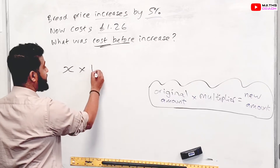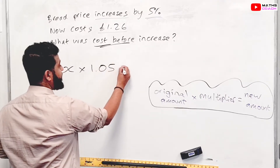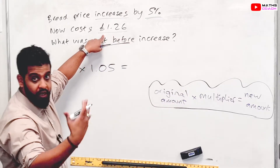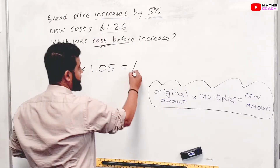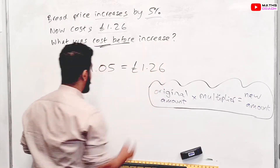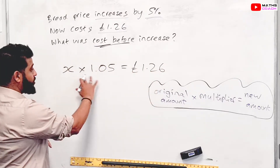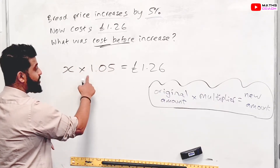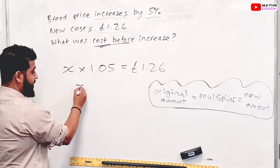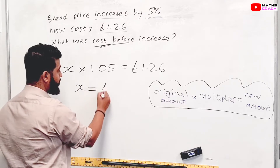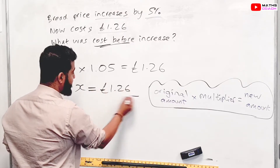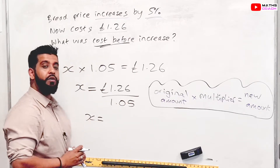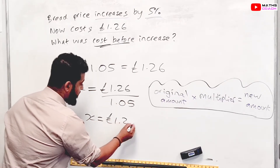What's the multiplier? If it's increasing by 5%, we add 5% to our 100% and get 105. As a multiplier, that would be 1.05. The new amount is the price we pay after the increase, which is £1.26. To work out X, our original amount, we do the opposite operation: divide by 1.05. So X equals £1.26 divided by 1.05, and that gives us £1.20 on our calculators.